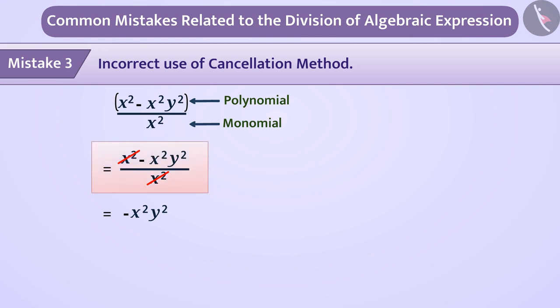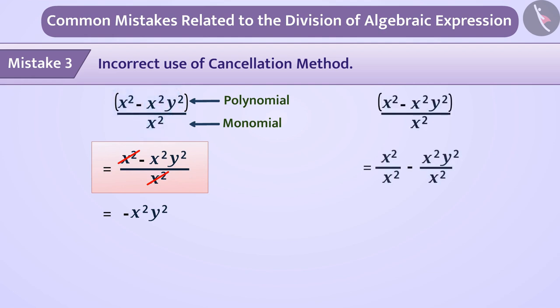We have to divide each term of the numerator by x squared. We can do this by dividing each term of the polynomial separately by the monomial, which gives us the correct answer: 1 minus y squared.